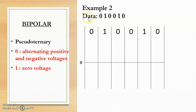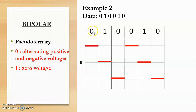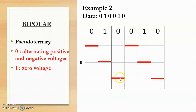Let us consider another example. The given data is 0 1 0 0 1 0 and we need to convert it into a digital signal using pseudo ternary. The first bit is 0 — alternating positive and negative voltages; since this is the first 0 in the sequence we assume positive logic and represent it as positive voltage. The next bit is 1, meaning 0 voltage on the reference line. The next bit is 0; since the previous 0 was positive, this will be negative. Then again a 0 — previous 0 was negative, so this will be positive.